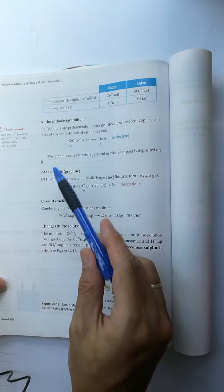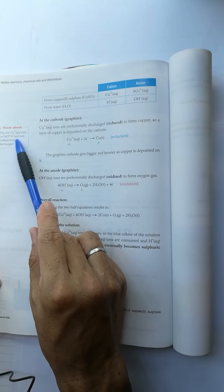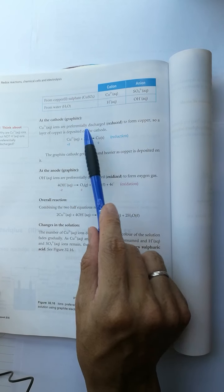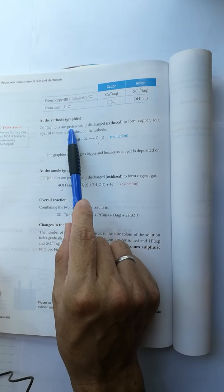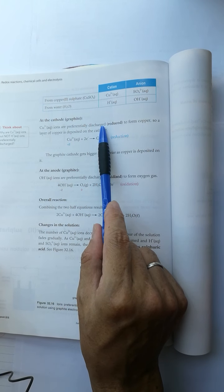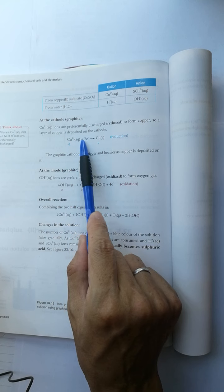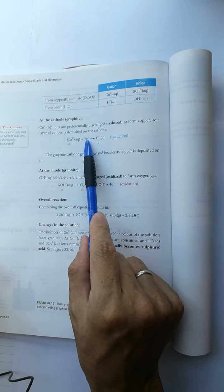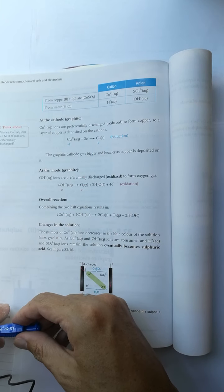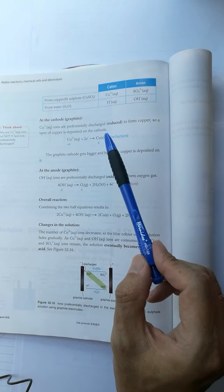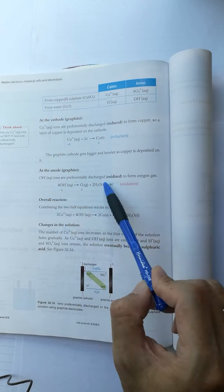For the copper(II) ion, it is a stronger oxidizing agent than the hydrogen ion. As a result, copper(II) ions are preferentially discharged, gaining electrons to form copper metal. The observation is colorless oxygen gas formed at the anode.